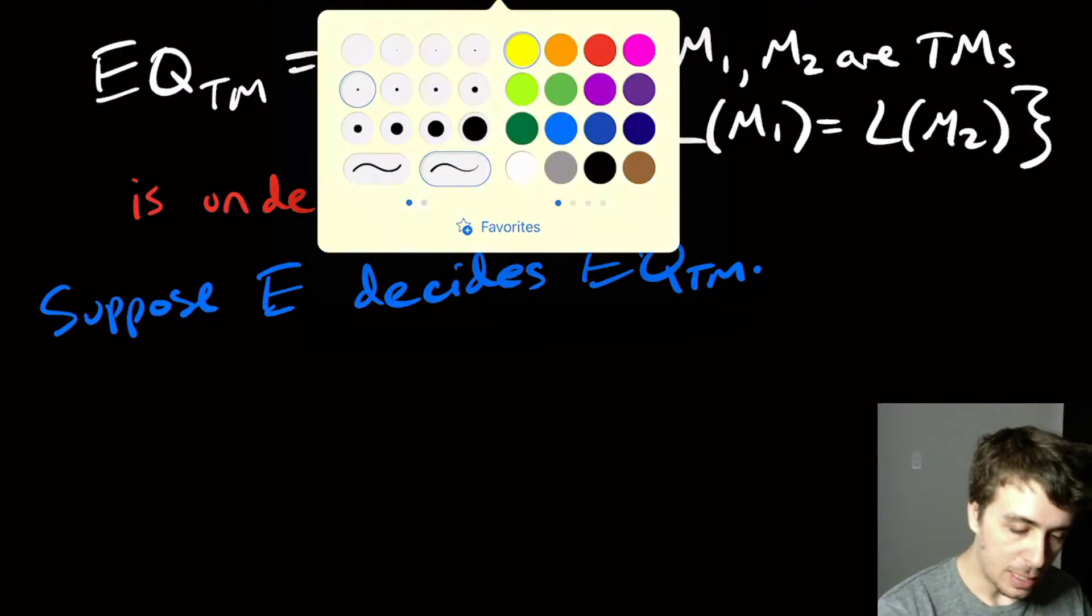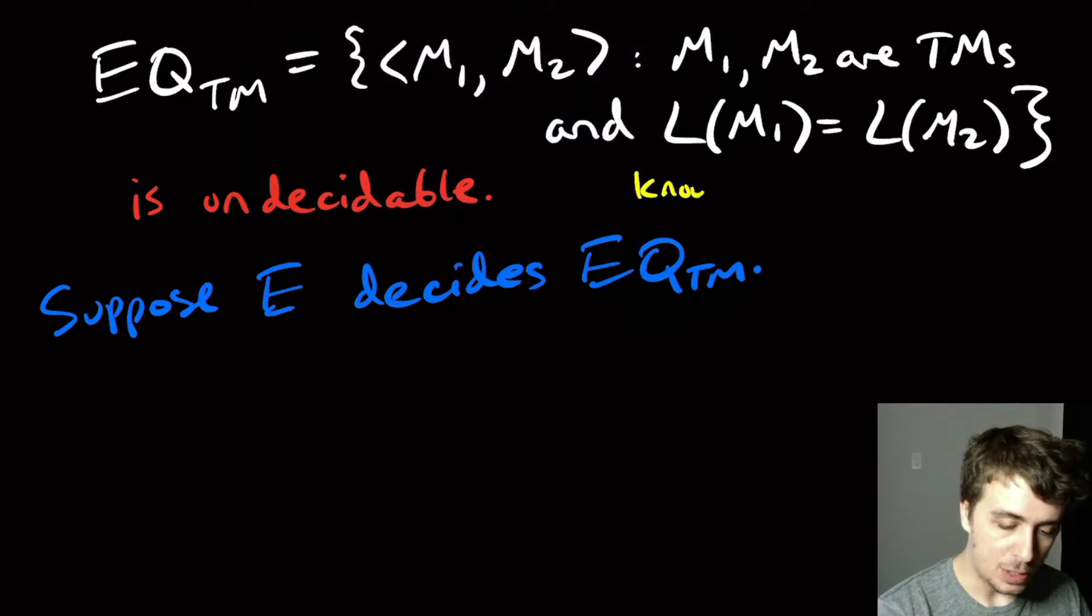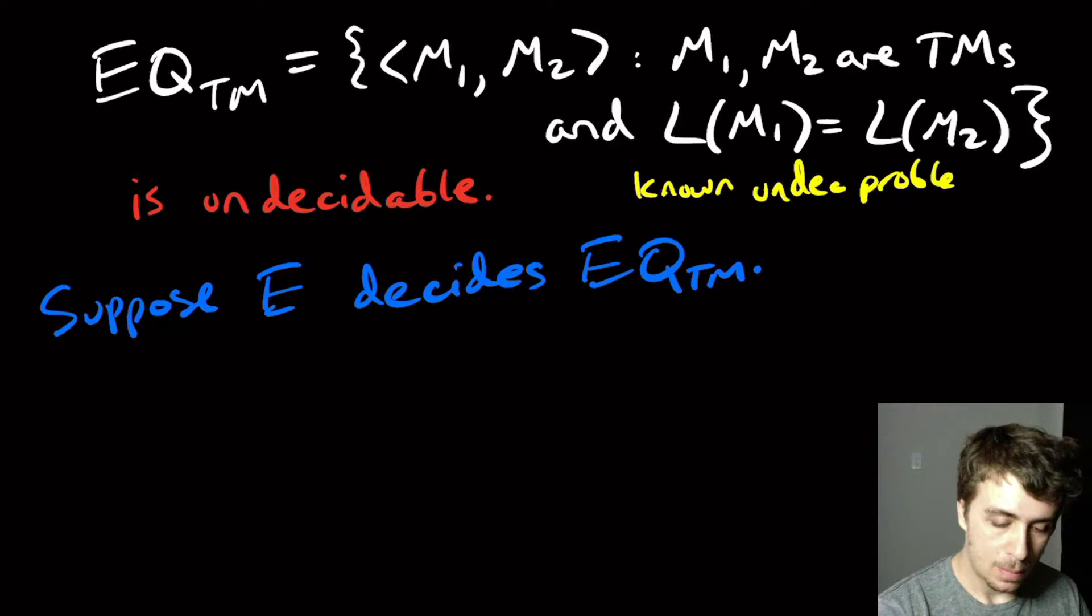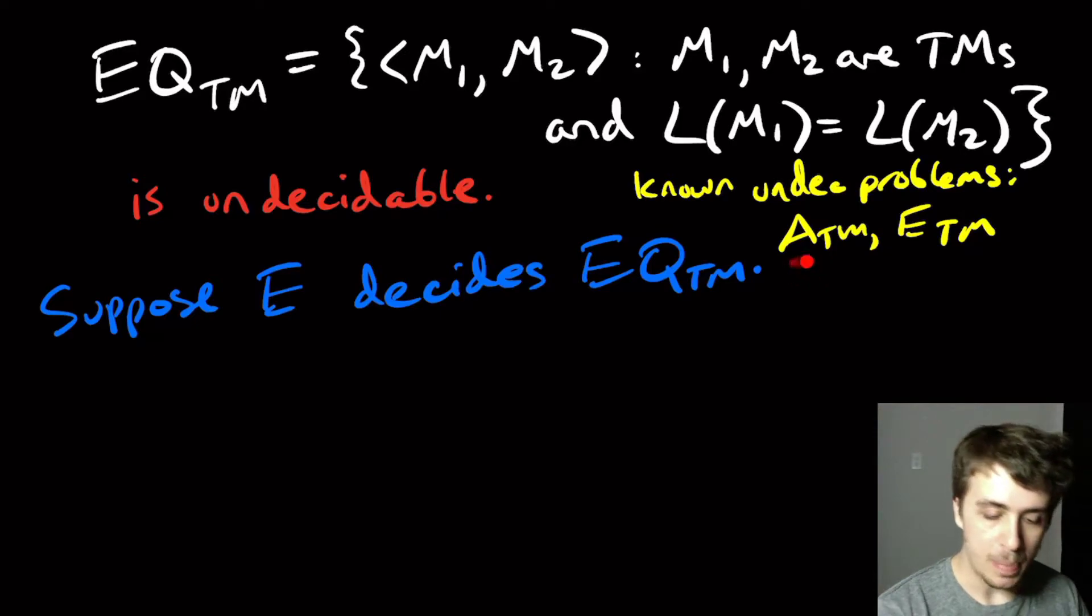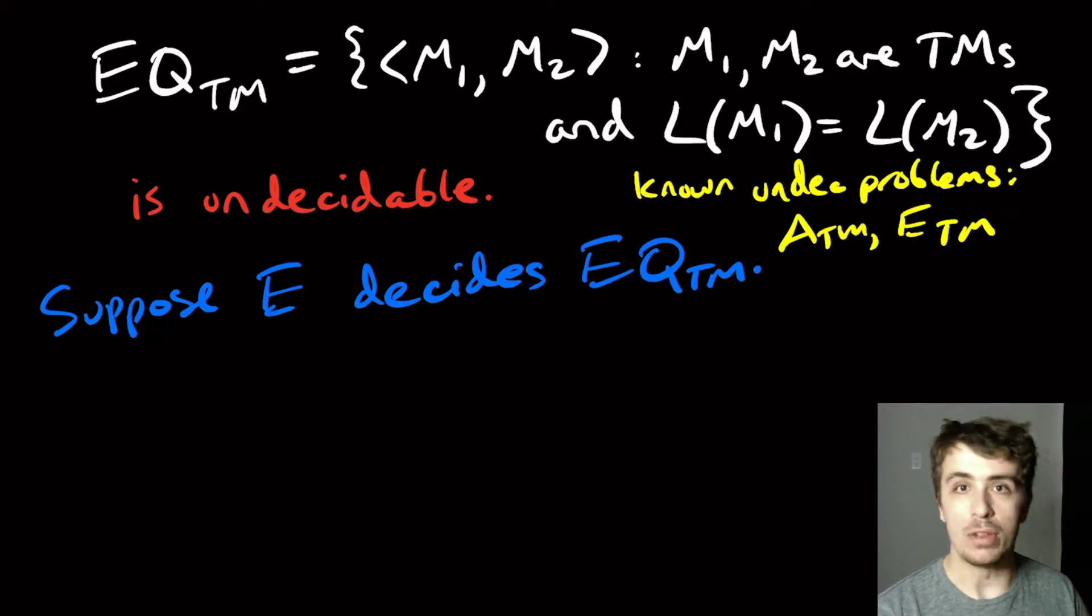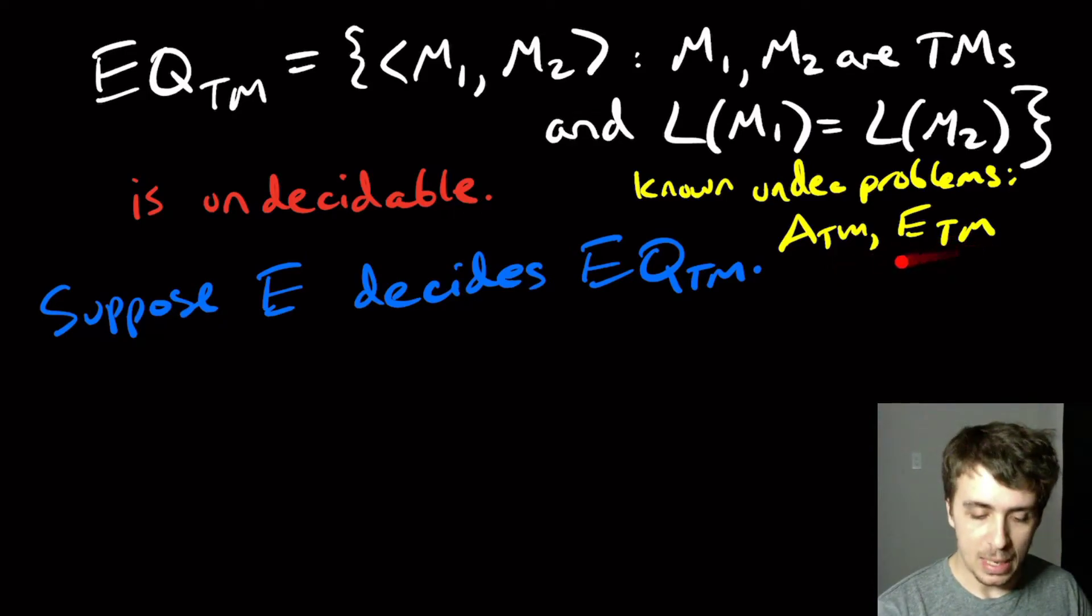The list of known undecidable problems up to this point are the ATM problem and the ETM problem. The first one being a Turing machine and an input, figuring out whether it accepts the input, or ETM, whether the language is empty. You could use either one of these. It turns out either one works, but the ETM one is way easier.